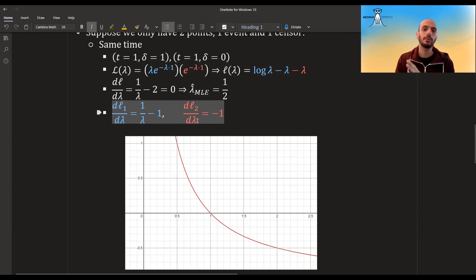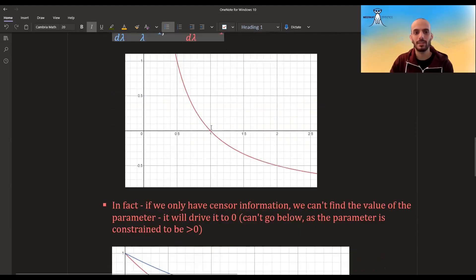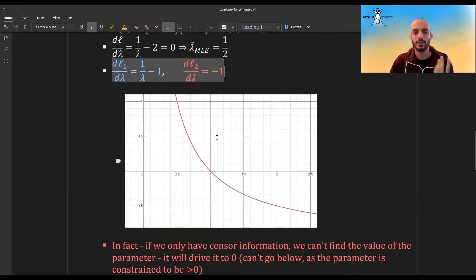Whereas for the second term for the survival, it's always pushing down. It's always trying to move the parameter more and more down. And here it's a constraint problem because the parameters here for an exponential model, it can't be below zero. This is how the parameter, the distribution is constructed. The parameter has to be above zero. So it will try to push it indefinitely to zero.